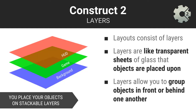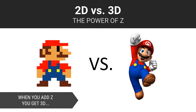Layouts consist of one or more layers. Layers are like stackable, transparent sheets of glass that objects are placed upon. Layers allow you to group objects in front or behind one another. This is commonly referred to as the Z-order. In your math classes, you probably learned that Y is the north-south or vertical dimension, and X is the side-to-side or horizontal dimension. Layers allow you to control the third, or Z-dimension. Z defines the depth. See the difference between the pixelated 2D version of Mario versus the 3D version.